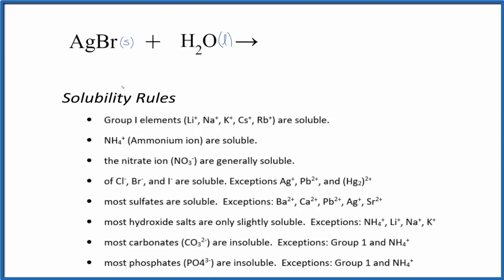We're looking for either silver or the bromide ion. Here is the bromide ion. It says salts of the chloride, bromide, and iodide ion are soluble with a few exceptions. And here's our exception: silver. So this is going to be insoluble in water.